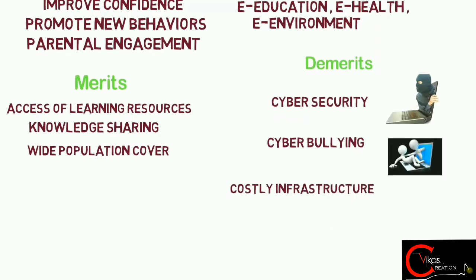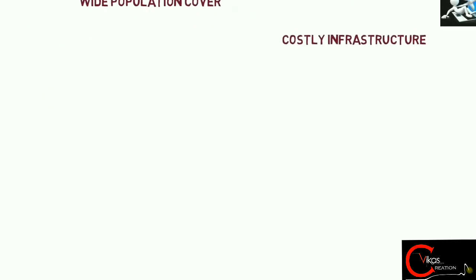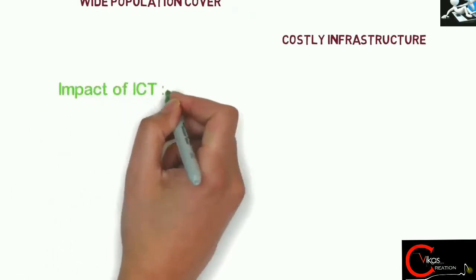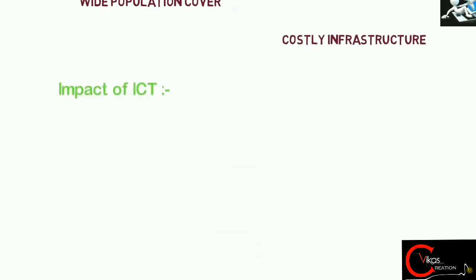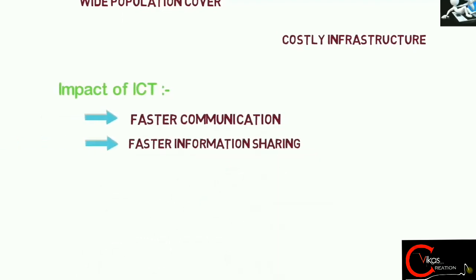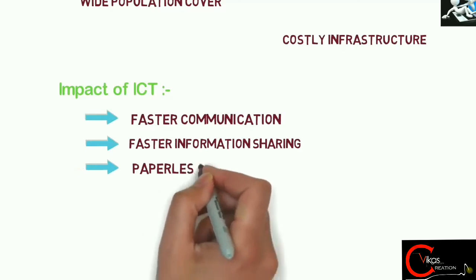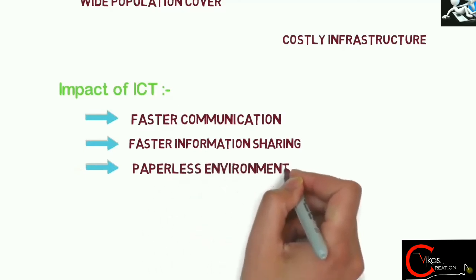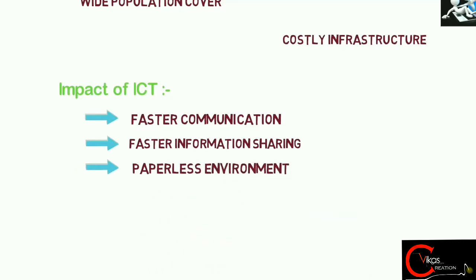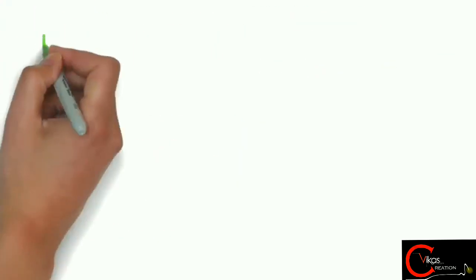Like cyber security, cyber bullying, and costly infrastructure. The gadgets used for ICT are very expensive. Following are the impact of ICT: faster communication, faster information sharing, and paperless environment which is very easy to use and also beneficial for our environment.